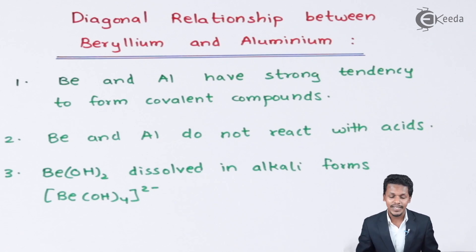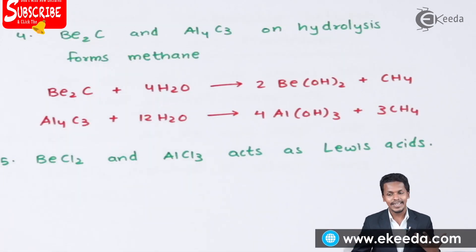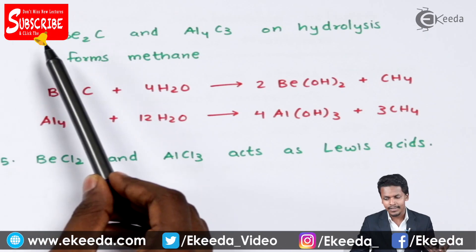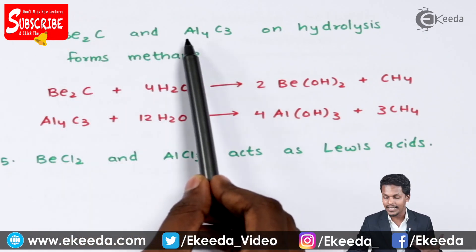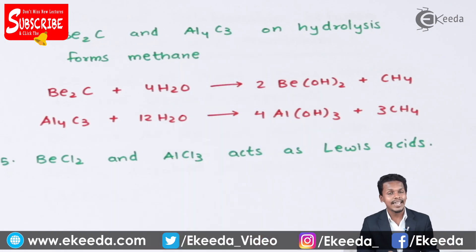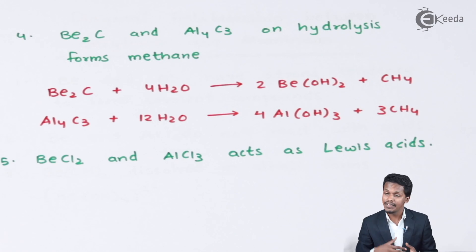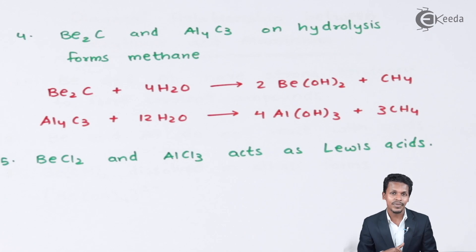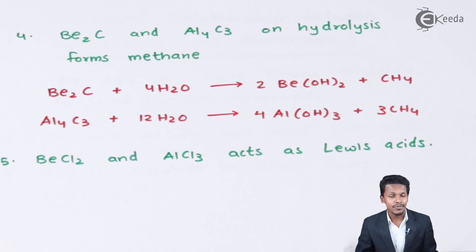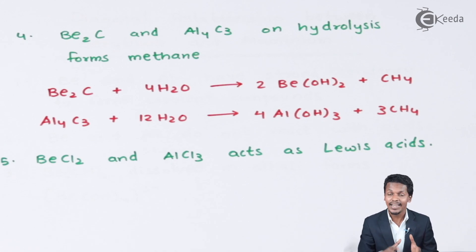The fourth point: beryllium carbide (Be₂C) and aluminium carbide (Al₄C₃), when hydrolyzed, both produce methane (CH₄). This is not true for other group 2 elements — for example, calcium carbide when reacted with water does not produce methane; instead it gives acetylene. This highlights how beryllium is completely different from other group 2 elements and is more similar to aluminium, which belongs to the p-block.